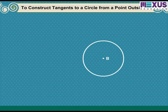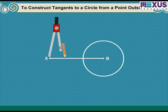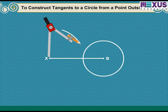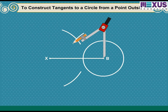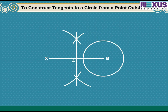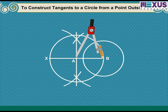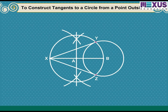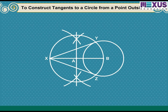We are given a circle with center B and a point X outside it. We will construct two tangents from X to the circle. First, join center B and point X, then bisect line segment XB. Mark A as the midpoint of XB. Taking A as center and AB as radius, draw a circle. Let it intersect the given circle at points Y and Z. Join XY and XZ. Thus, XY and XZ are the required two tangents.